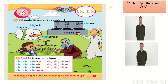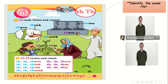So today we have the sound 'th' and the sound 'th'. We have 'th' for 'three' and 'th' for 'the'. Now look at the action for this sound. Look here. Three. Three.